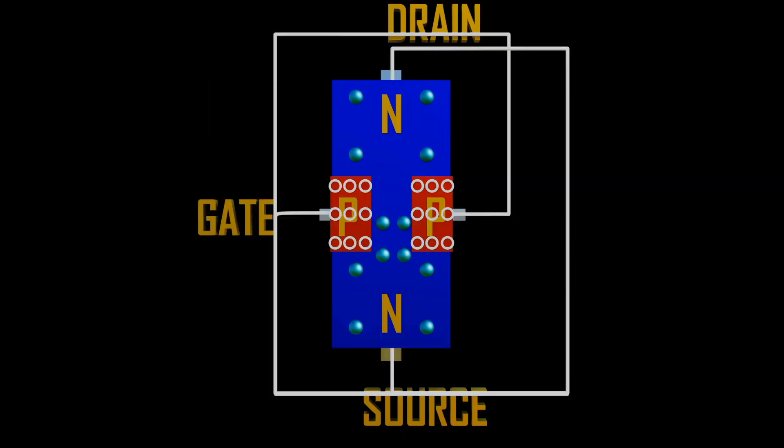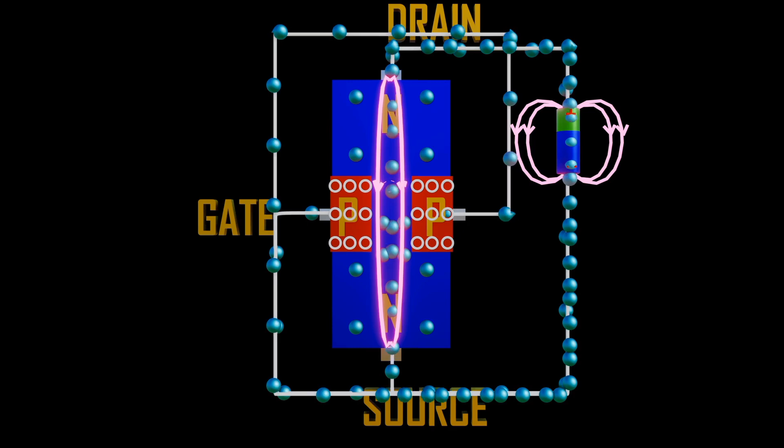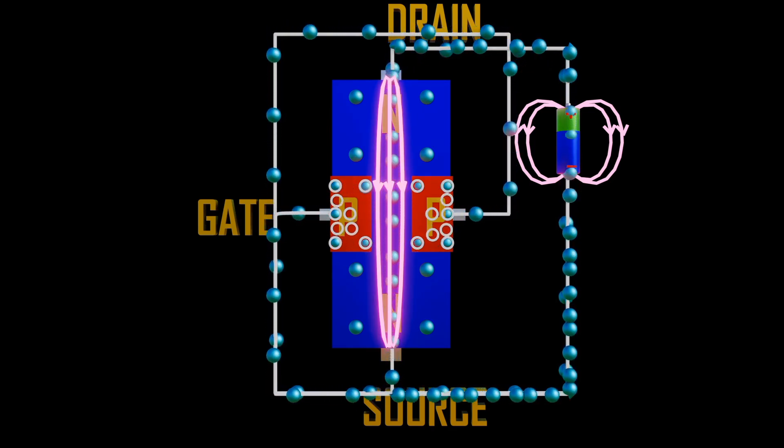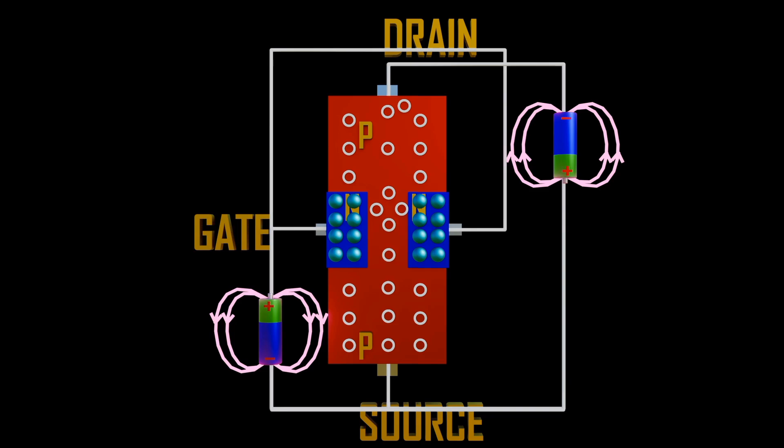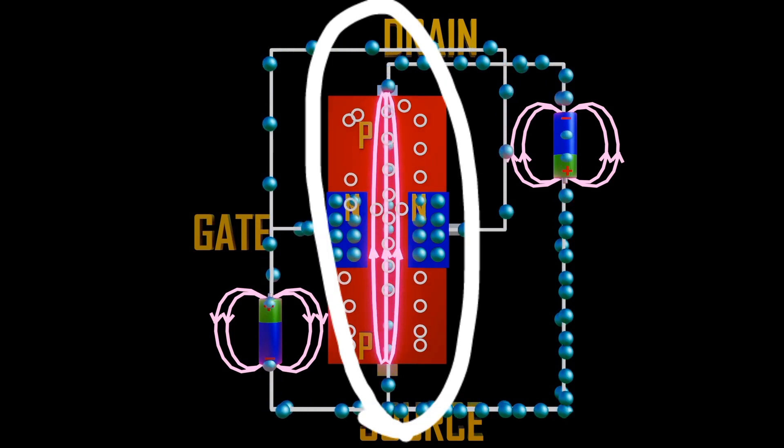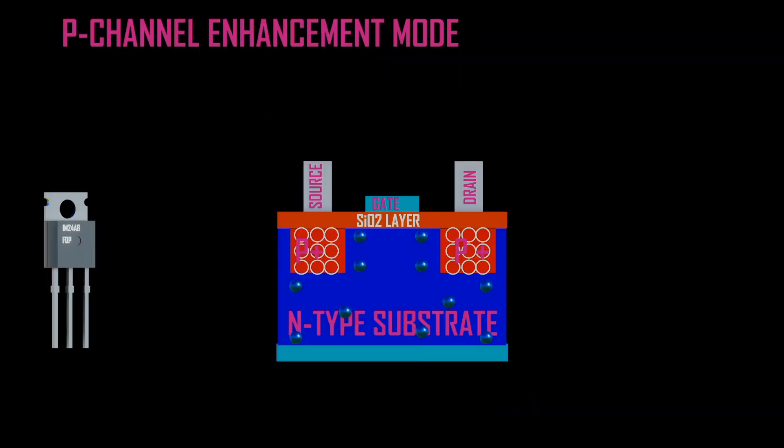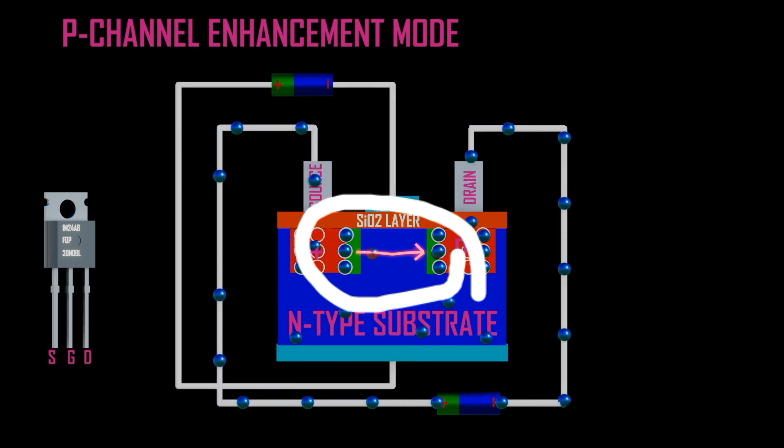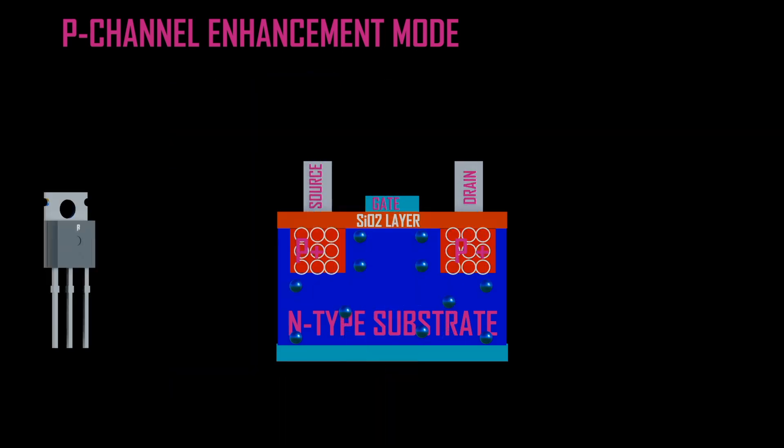JFET is a unipolar transistor which acts as a voltage-controlled current device. It is a device in which current at two terminals is controlled by the action of an electric field at the PN junction. As opposed to MOSFET, which creates a junction via a field generated by a conductive gate separated from the gate region by a thin insulator. We will talk about MOSFET in our next video, kindly don't miss.